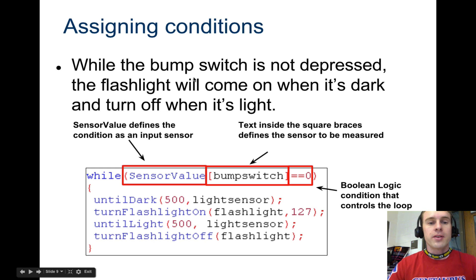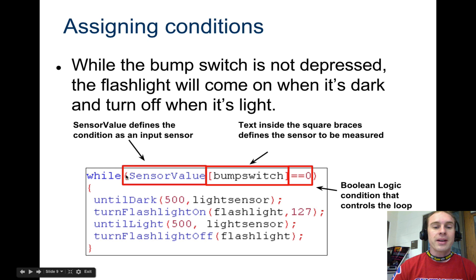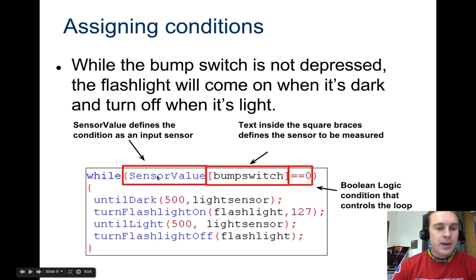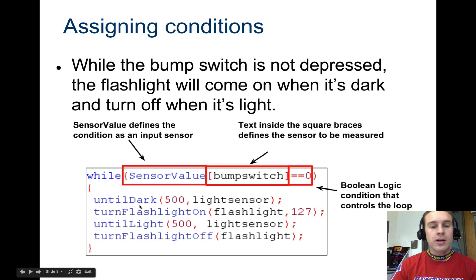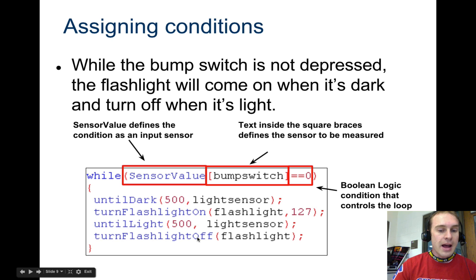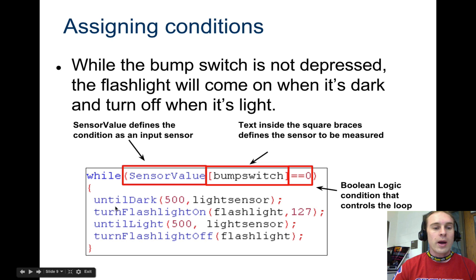If you're going to assign conditions — say we want to assign a condition while the bump switch is not depressed, or a flashlight comes on when it's dark and turns off when it's light. As long as the button is not pushed, you say while sensor value — and you always have to put sensor value if you want to use a sensor. Type sensor value with a capital V, then in square brackets put the name of the sensor, then your Boolean logic. In this case it's exactly equal to zero, meaning the switch is not being pushed. Then wait until dark, turn the flashlight on, then wait until it's light and the flashlight turns off. At that point it comes back up and checks if the bump switch is still not pushed, and if so, goes through again.